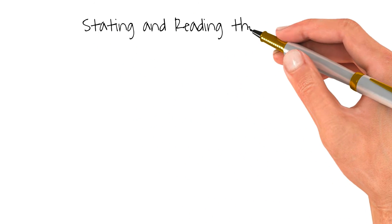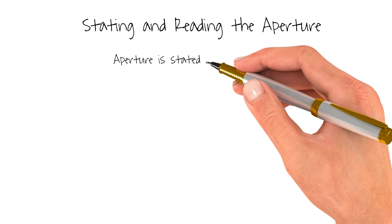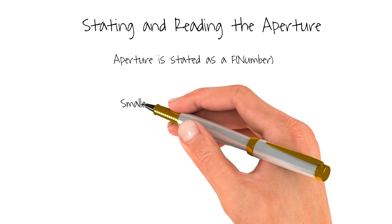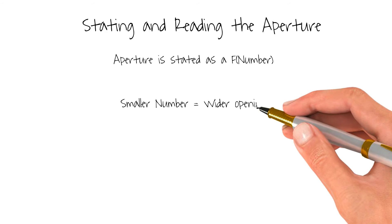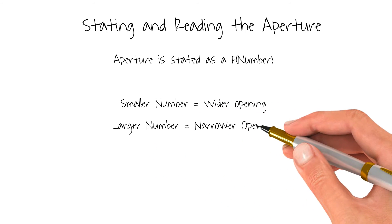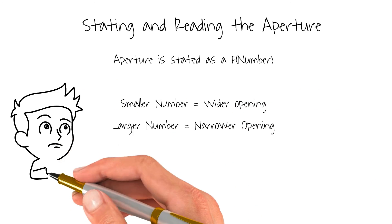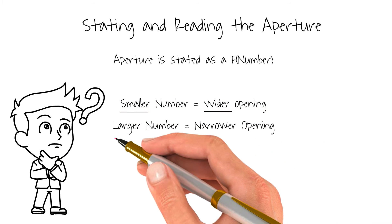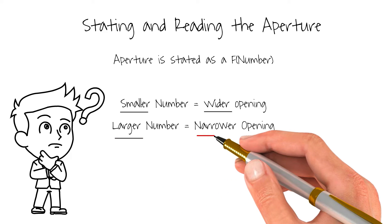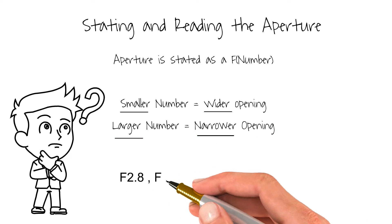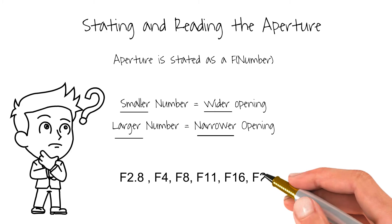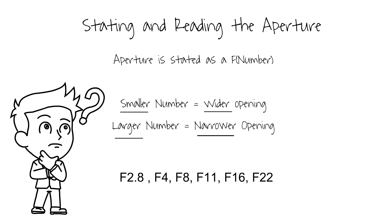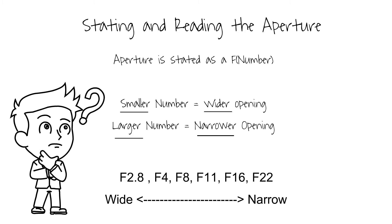The aperture is stated as an F number. The smaller number is a wider opening and the larger number is a narrower opening. I know that sounds counterintuitive, but just remember: the smaller the number, the wider the opening; the larger the number, the narrower the opening. For example, F2.8, F4, F8, F11, F16, F22 are different variations of aperture size, with F2.8 being the wider end and F22 being the more narrow end.